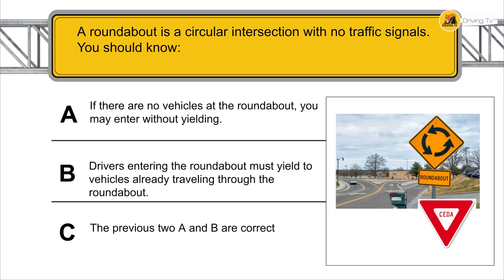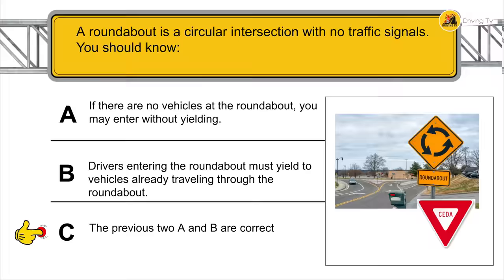A roundabout is a circular intersection with no traffic signals. You should know: if there are no vehicles at the roundabout, you may enter without yielding. Drivers entering the roundabout must yield to vehicles already traveling through the roundabout.